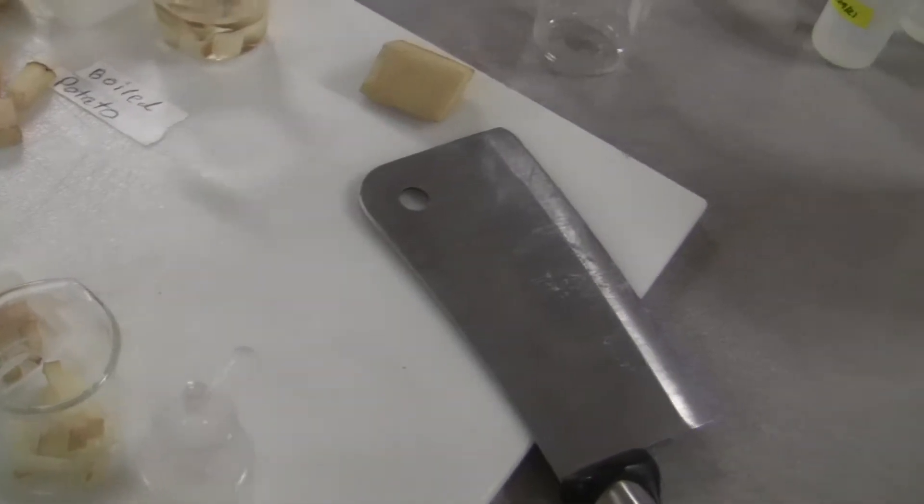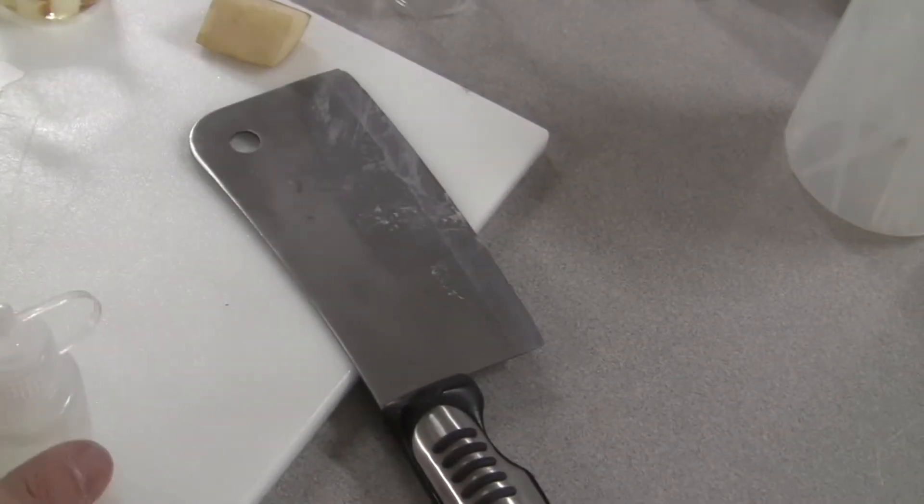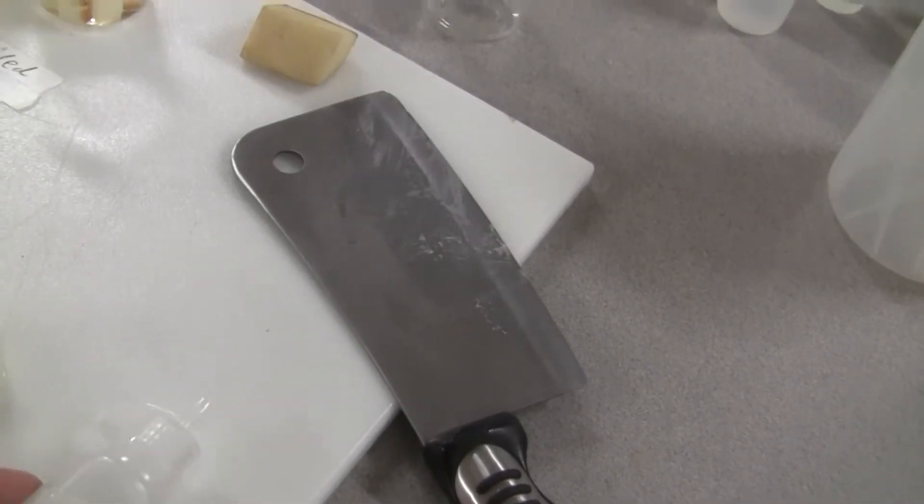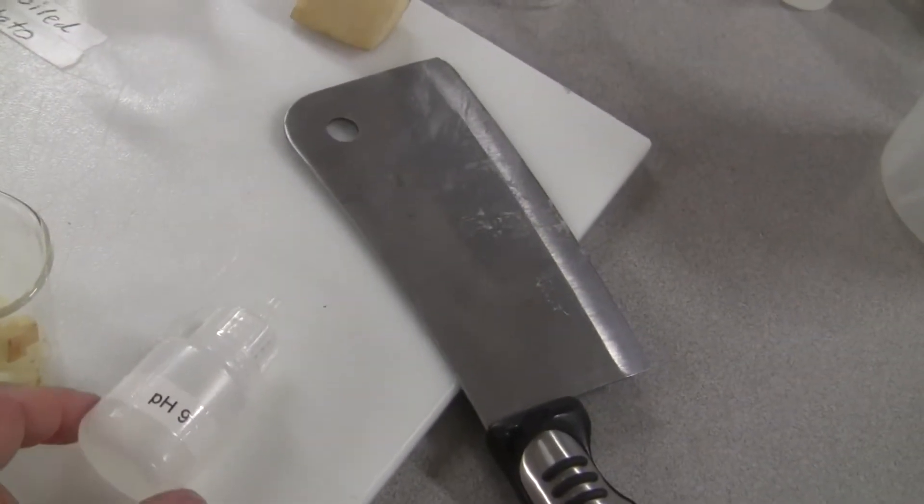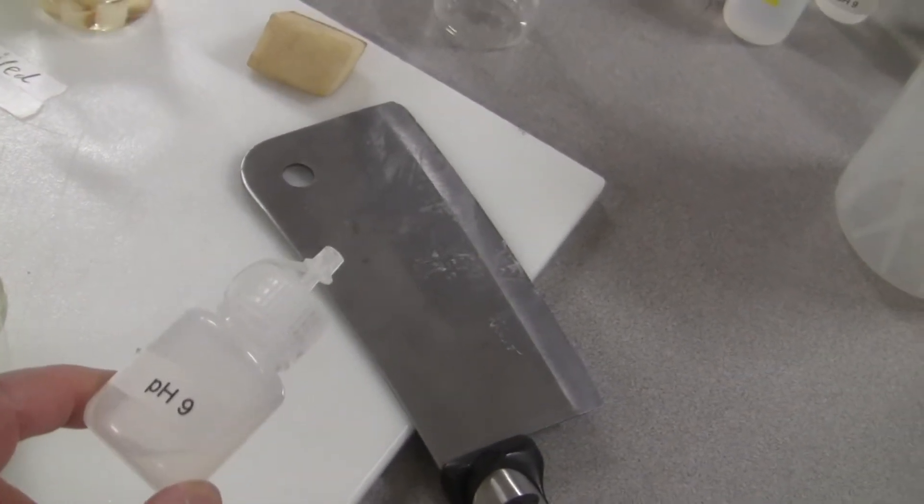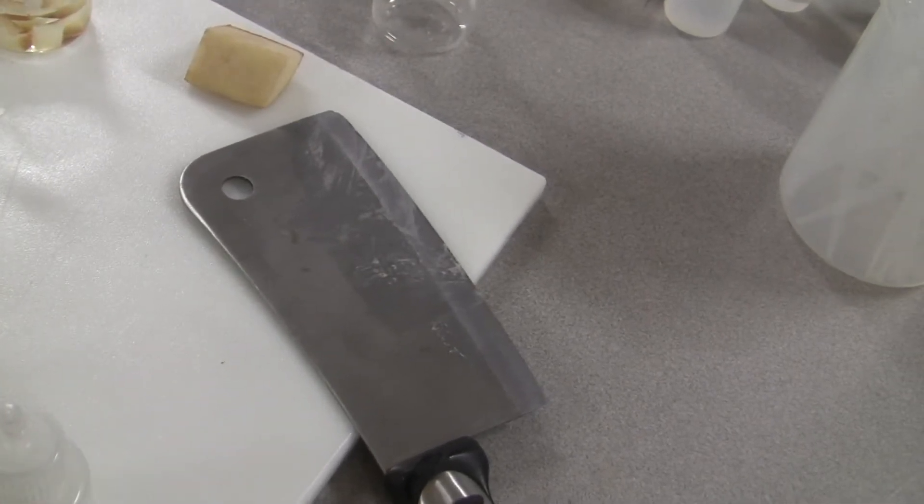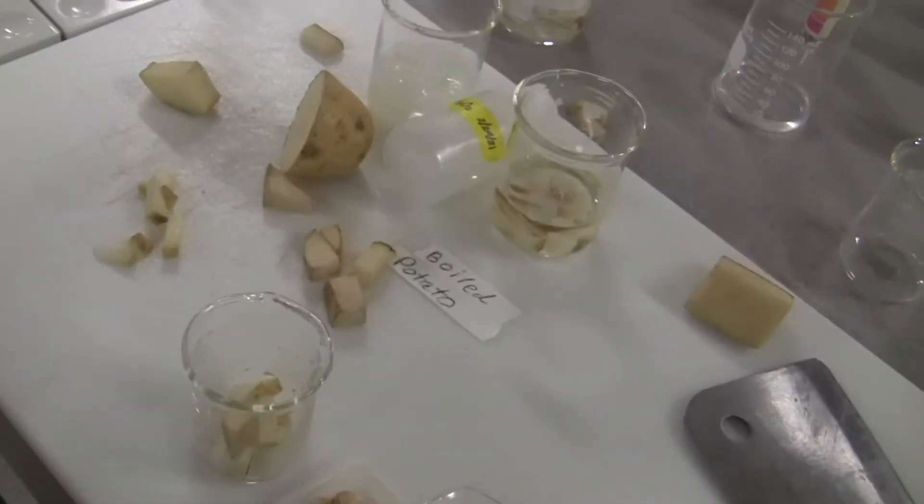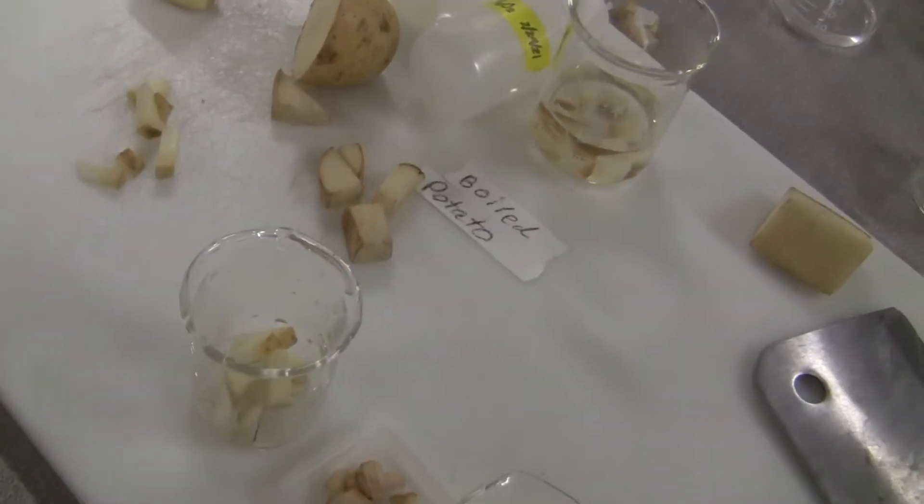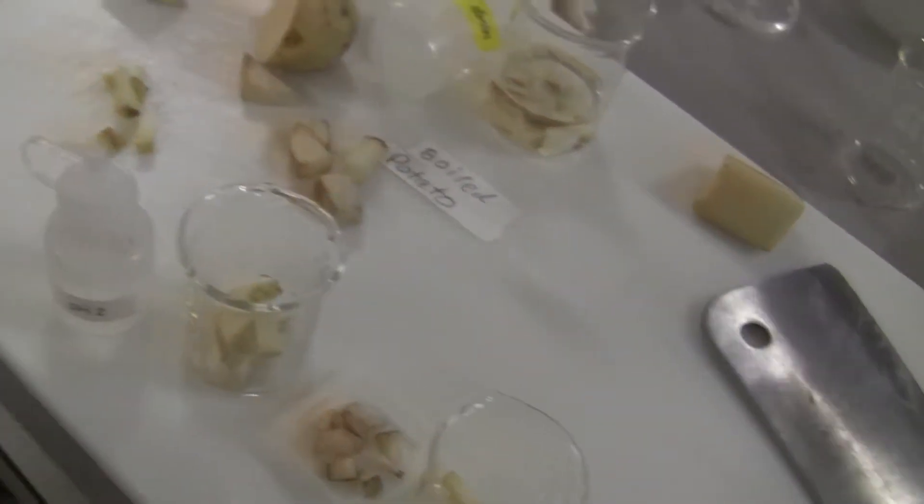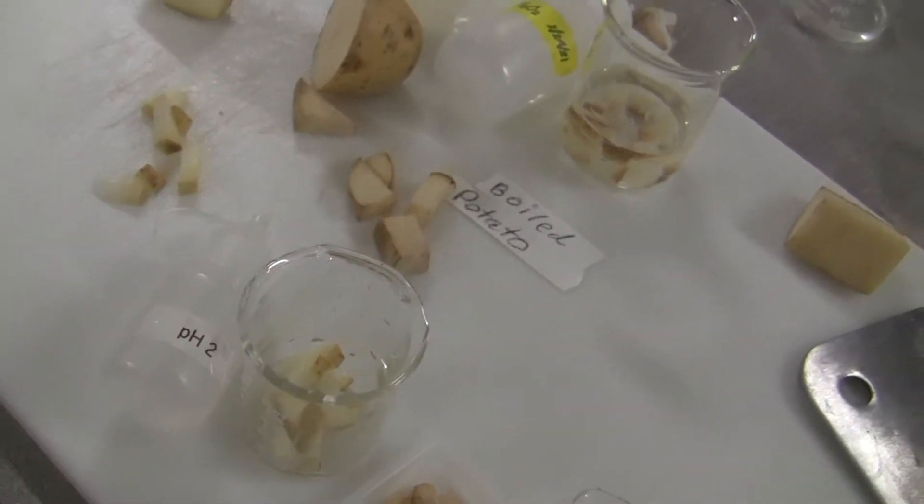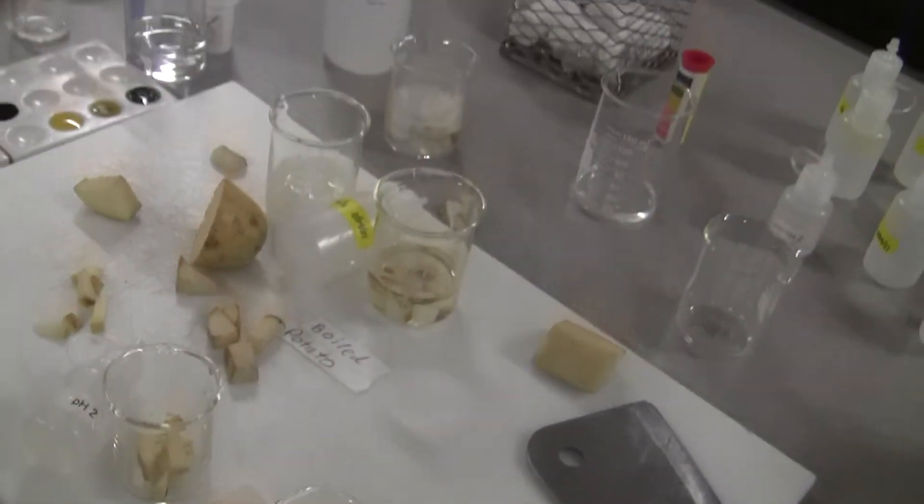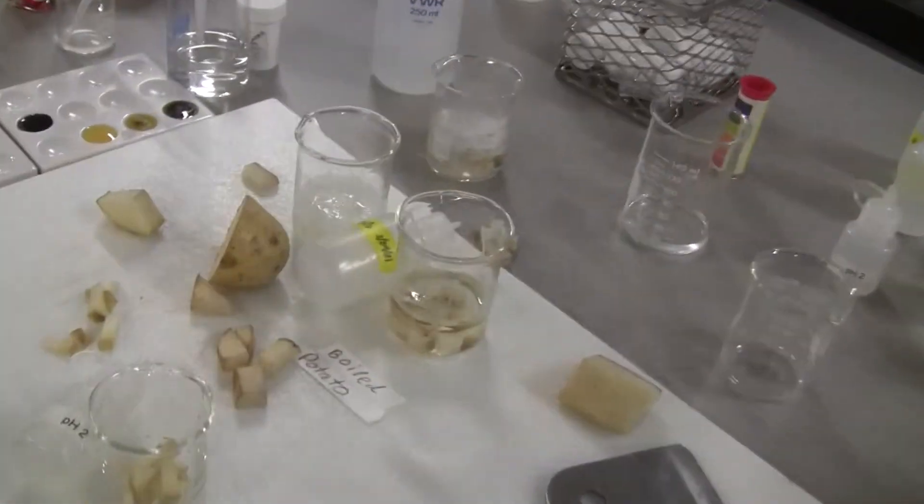Let's start with the pH first. Some pH 9 right here, if you guys can see it. The solution is a very basic pH of 9. And then this one has pH of 2 right there. Maybe I should not move them around so much so you can see it. pH of 2. So I'm going to pour some of these into the beaker. I hope you guys can see.